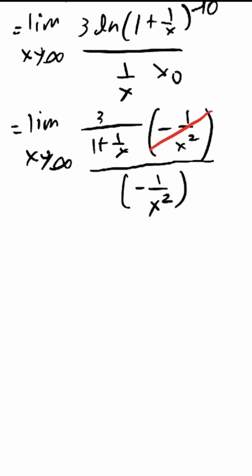Now notice we can cancel these two terms out, and so this limit problem just becomes the limit as x goes to infinity of 3 over 1 plus 1 over x, which is just equal to 3.